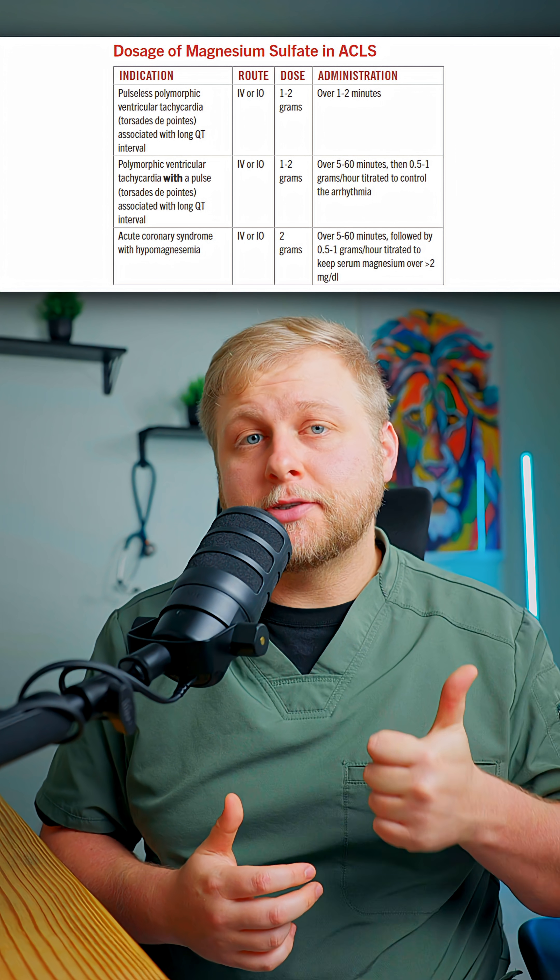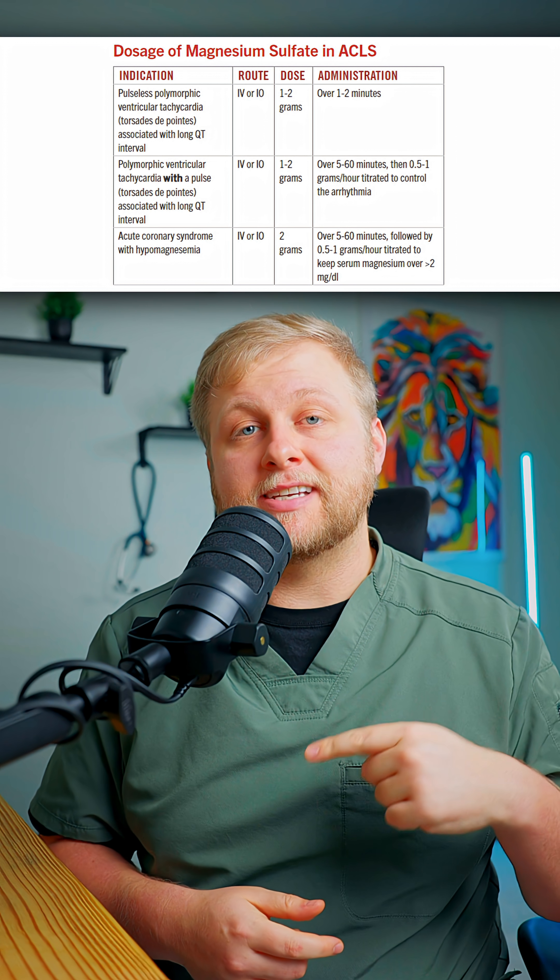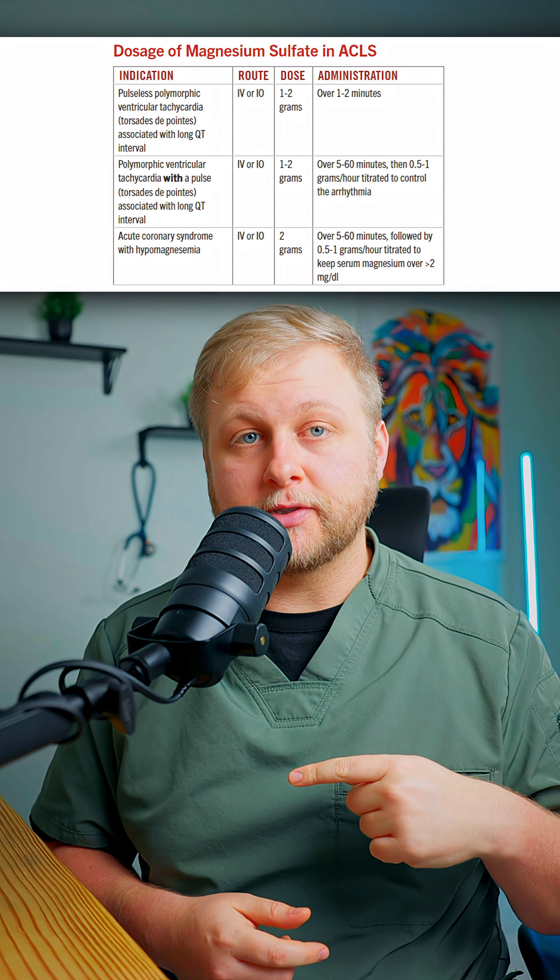The ACLS algorithm for this is actually pretty straightforward. You're going to give one to two grams of mag — IV push if they're pulseless, or over five to ten minutes if they have a pulse. Mag's kind of like amiodarone in this sense: it's the antiarrhythmic that's going to keep you out of the rhythm, but electricity is going to get you out of the rhythm initially.